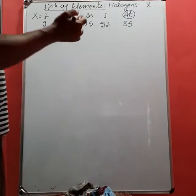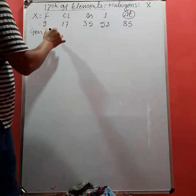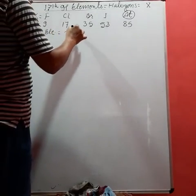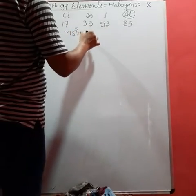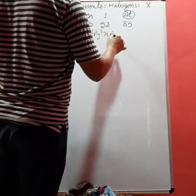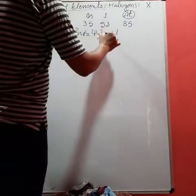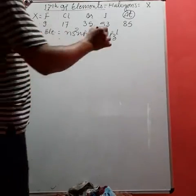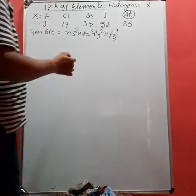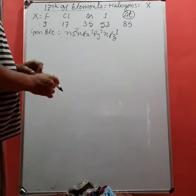The general electronic configuration is ns2 npx2 npy2 npz1. Only the z orbital is unpaired, therefore it generally shows monovalent nature. The 17th group elements are highly reactive.